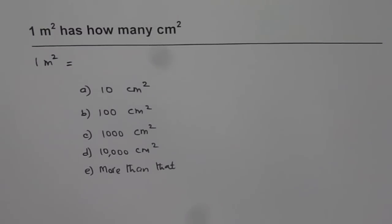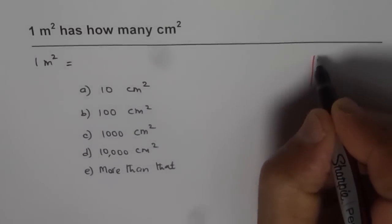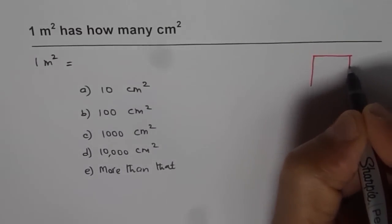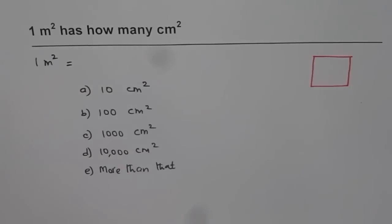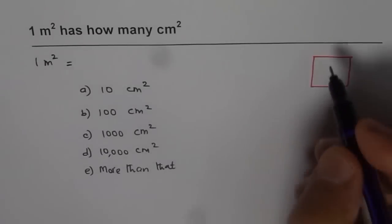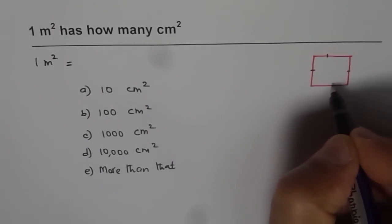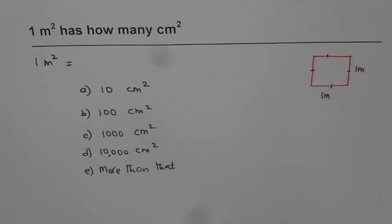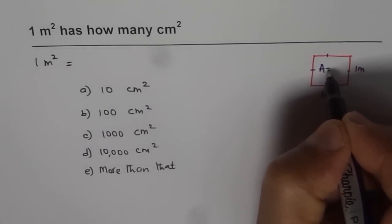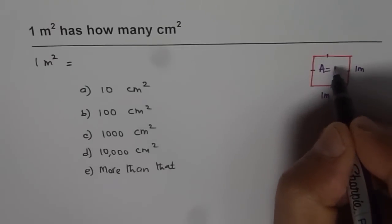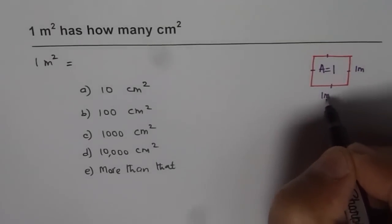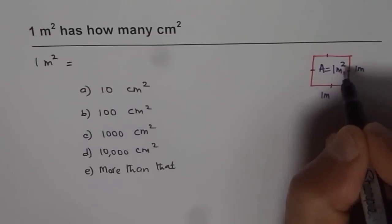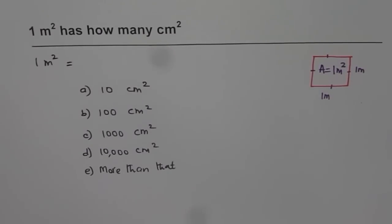Let us first understand what is one meter square. I will make a square here. This square has a length of 1 meter and a width of 1 meter — a square, as you know, has all equal sides. The length and width of this square is 1 meter, and in that case, how much is the area? Area is length times width: 1 times 1 is 1, and meters times meters is meter square. That is the area of a square whose sides are 1 meter each.